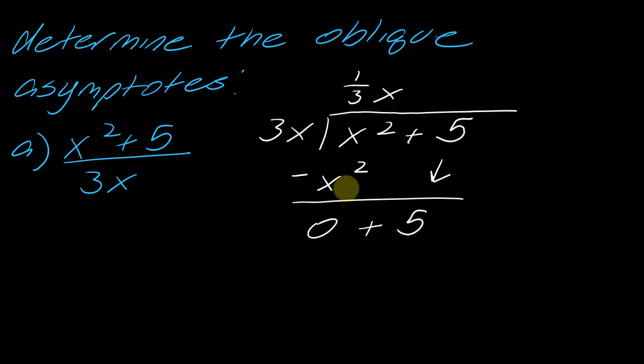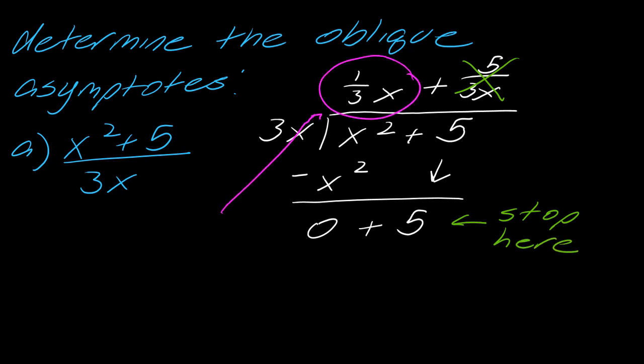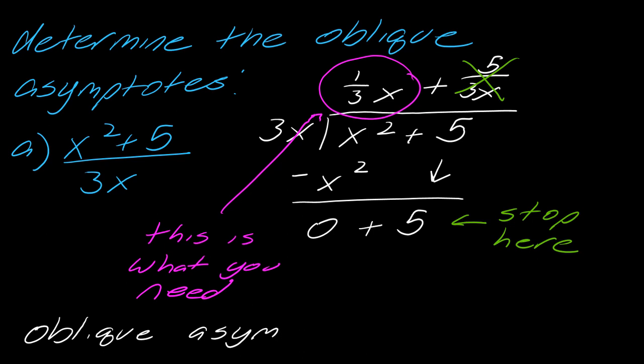So you'd have a remainder. So normally what you'd have here then is you would say, oh, now I just would multiply this by 5 over 3x. This would be kind of your stopping point. And for oblique asymptotes, you don't need this. You can actually just stop here. And the only part that you need is this part here. So I'll just make this nice and clear. This is what you need. So the oblique asymptote is really what you get except for the remainder. So the oblique asymptote, if I just want to write that out, in this case, is going to be y equals 1 third x. And that would be it.